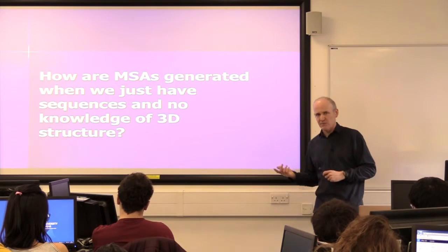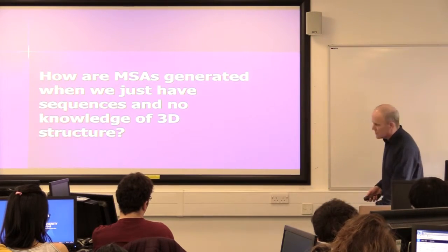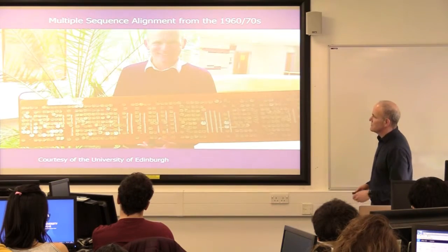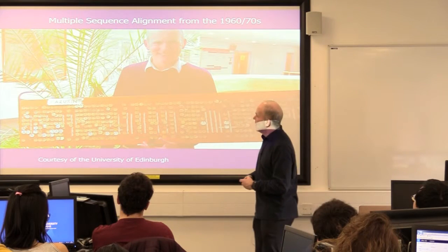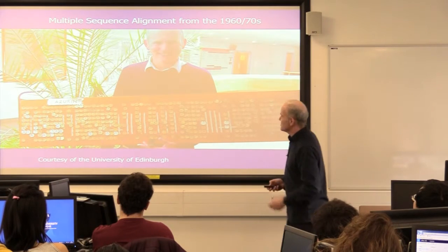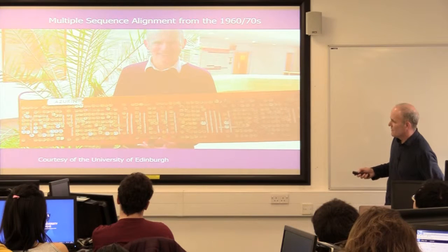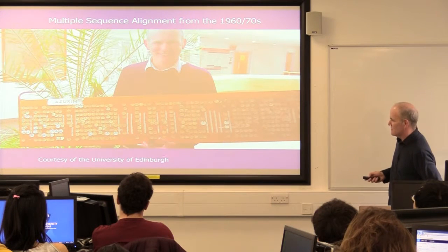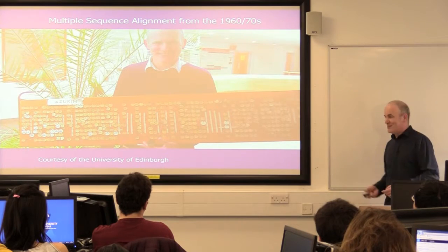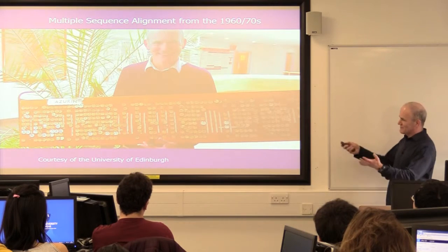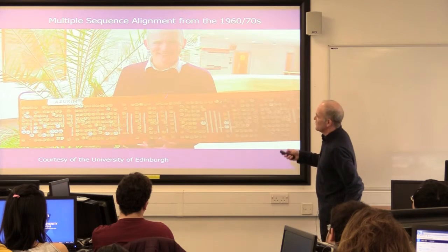So how do you generate a multiple alignment given that information? I want to talk about how it used to be done, almost before I was born. This is actually a multiple sequence alignment that they have at the University of Edinburgh. I gave a talk on multiple sequence alignment at Edinburgh and they pulled this thing out and said, oh, you must see this, Jeff. So I had to have a picture of me holding it.